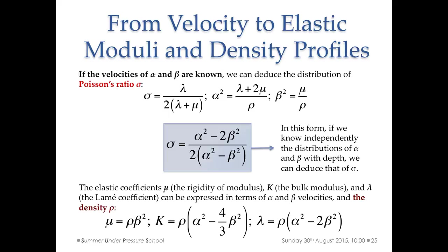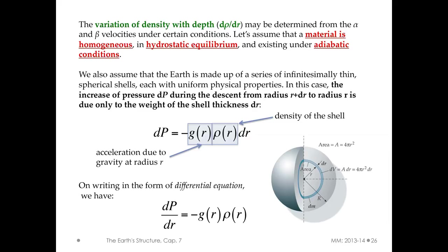Different seismic databases give different models, but all are spherically symmetric. Any deviation from these models indicates anisotropy. P and S wave velocity evolve as simple polynomial functions of depth. Once you have alpha and beta evolution with depth, using well-known elasticity relations you can get the Poisson ratio as a function of alpha and beta, as well as shear modulus, bulk modulus, and Lamé constants. What remains is density — it would be useful to also have the density evolution from the surface to the center of the core.